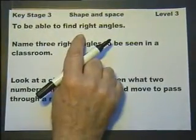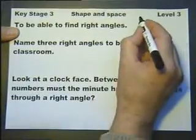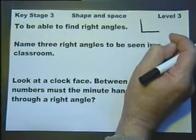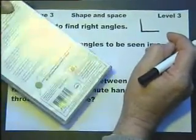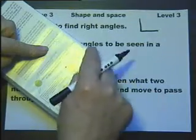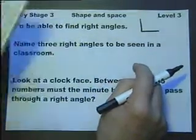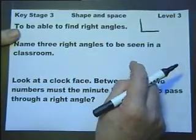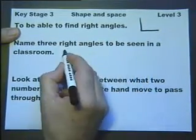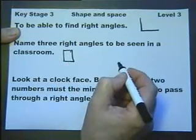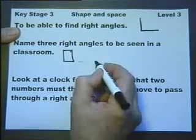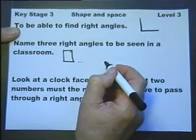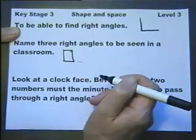To be able to find right angles, we need to know that a right angle is a corner. So you pick up a video. The corner of the video is 90 degrees. So we need to be able to recognize 90 degrees, and know 90 degrees. So name three right angles that can be seen in the classroom. You could say, corner of the window, corner of the classroom, in fact use the word corner anyway, corner of the textbook, corner of the blackboard, or corner of the whiteboard.